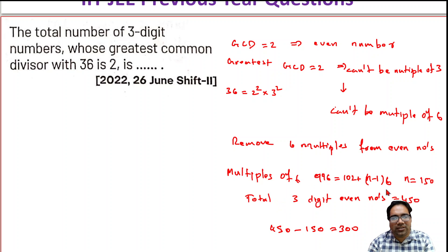Using the arithmetic sequence formula: a + (n-1)d = 996, where d is the common difference. That means there are 150 numbers - 150 multiples of 6 between 102 and 996, because the first multiple of 6 is 102 and the final multiple is 996 among 3-digit numbers. So we have a total of 450 even numbers, of which 150 are divisible by 6.